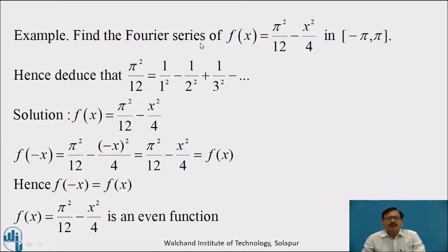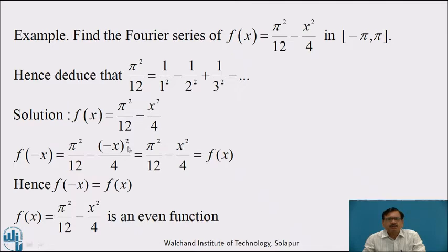Example: Find the Fourier series of f(x) = π²/12 − x²/4 in the interval (−π, π), and hence deduce that π²/12 = 1/1² − 1/2² + 1/3² − ⋯. Here f(x) = π²/12 − x²/4. Testing for even or odd: replace x by minus x — f(−x) = π²/12 − (−x)²/4 = π²/12 − x²/4 = f(x). Hence f(−x) = f(x), therefore f(x) is an even function.